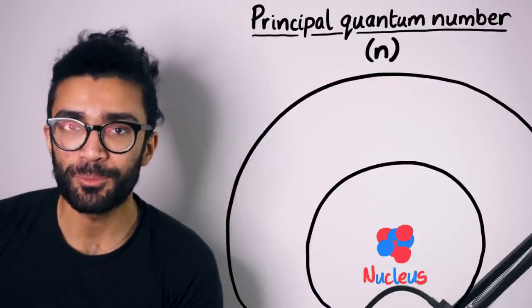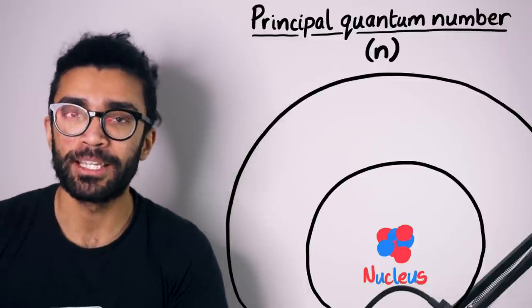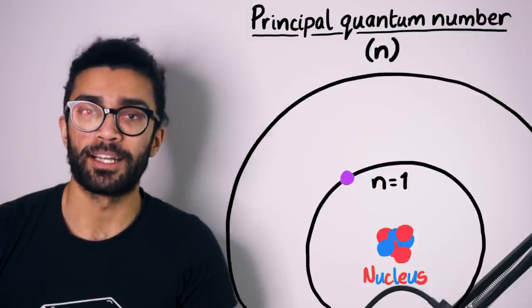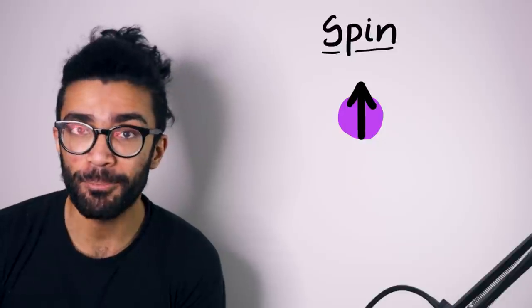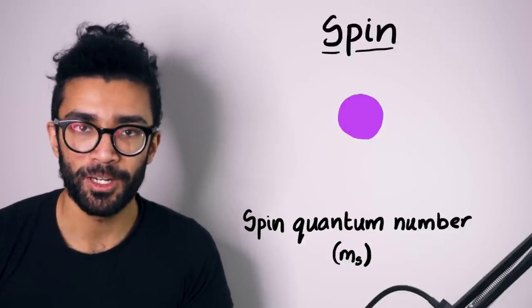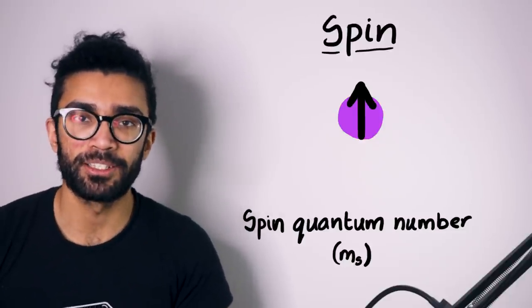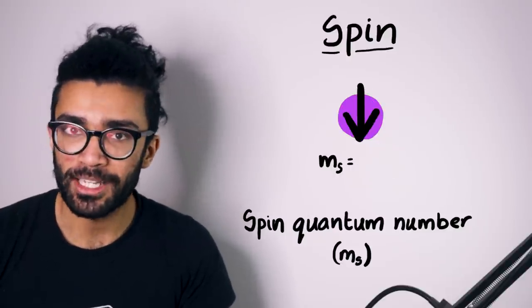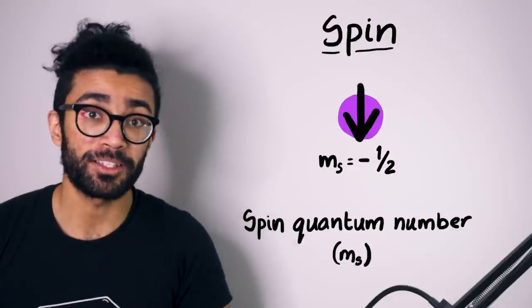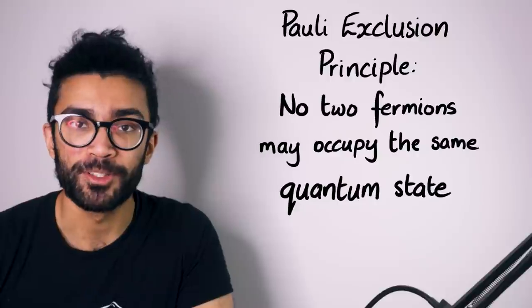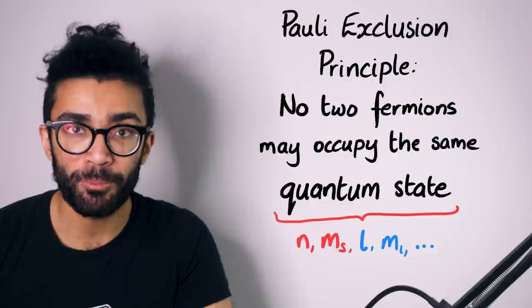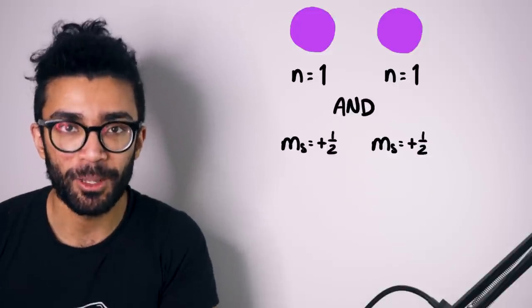If we give the electron a principal quantum number n equal to one, that tells us it's in the first shell; n equal to two means it's in the second shell. The next property we can discuss is known as the spin of an electron — electrons can be found in one of two different spin states, often called spin up and spin down. These are labeled with the spin quantum number m_s: if the electron is in the spin up state, m_s equals plus one half, and if it's in the spin down state, m_s equals minus one half. The reason for using plus and minus one half is because electrons have a spin of one half.